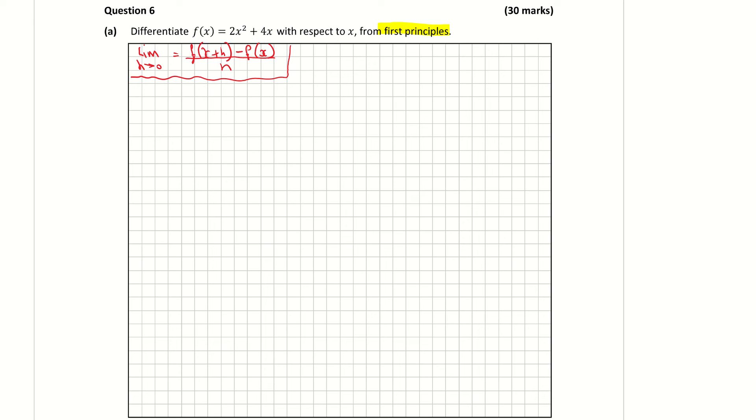Now, for my formula, I need f of x and I need f of x plus h. So I know what f of x is. f of x, they give it to me in the question. It's given as 2x squared plus 4x. So that's fine.